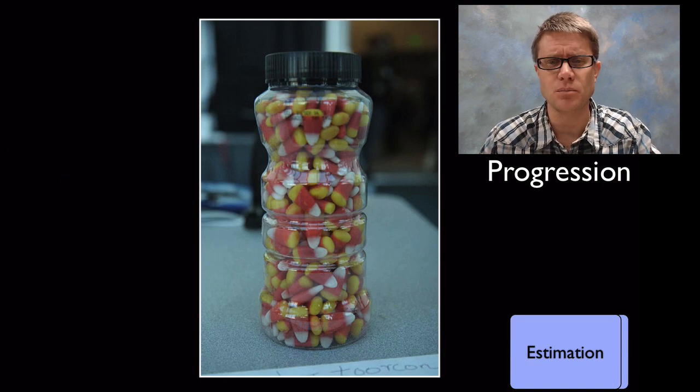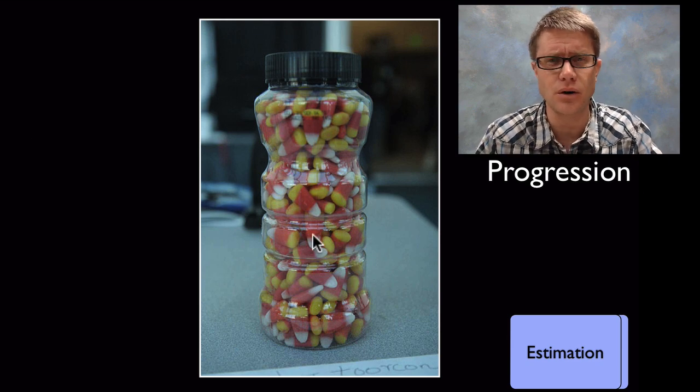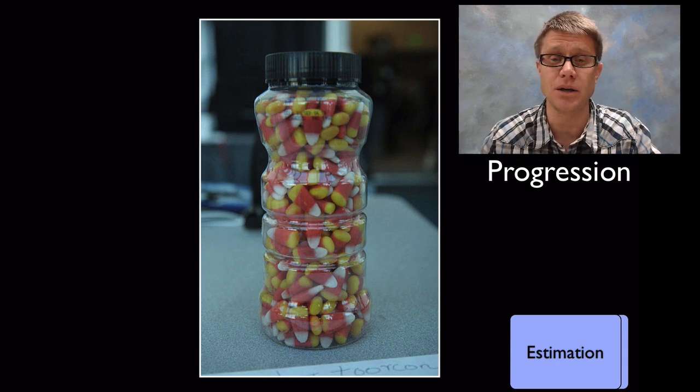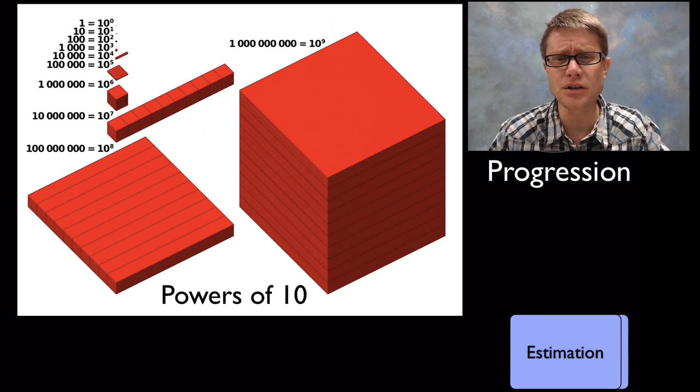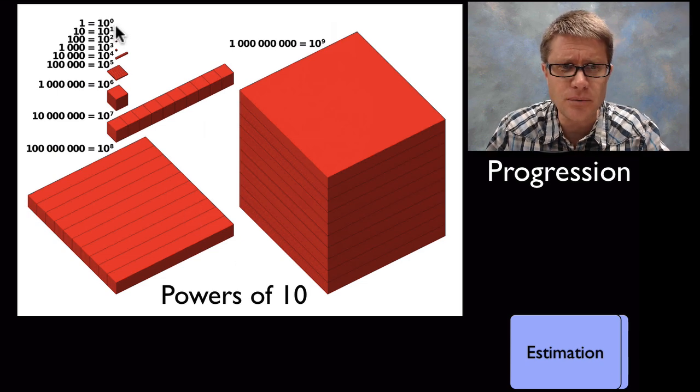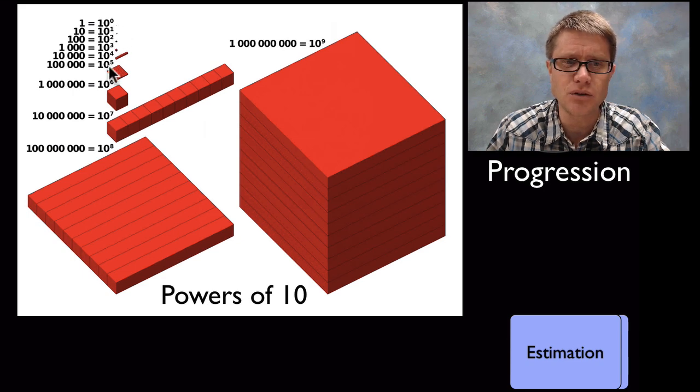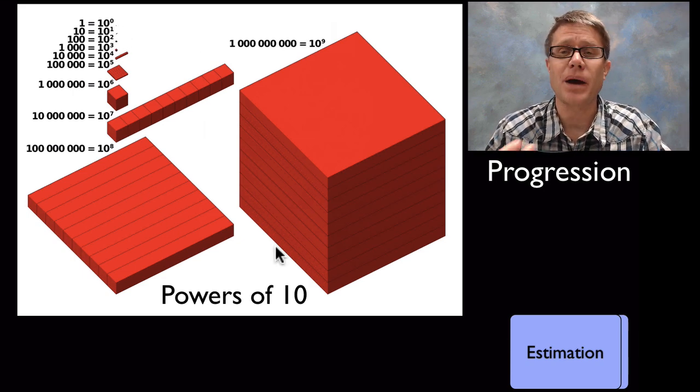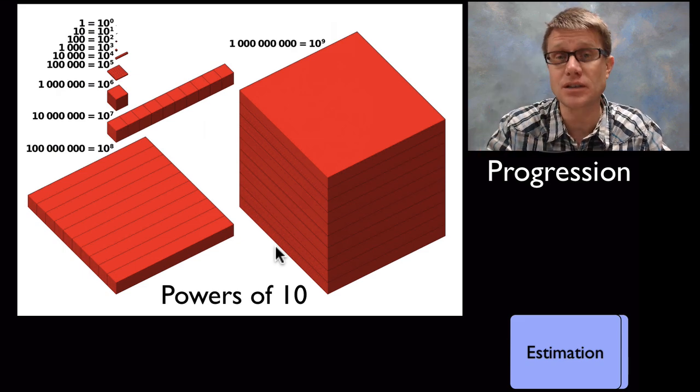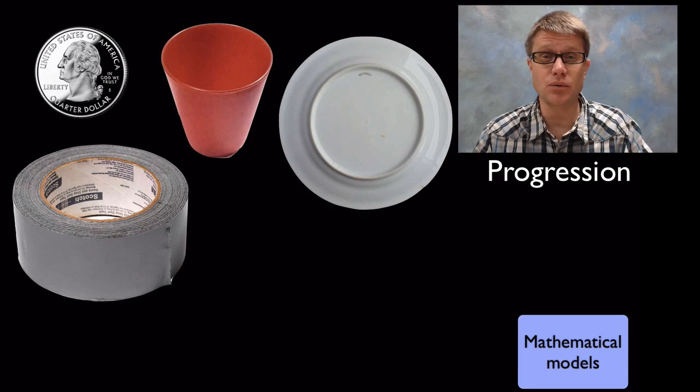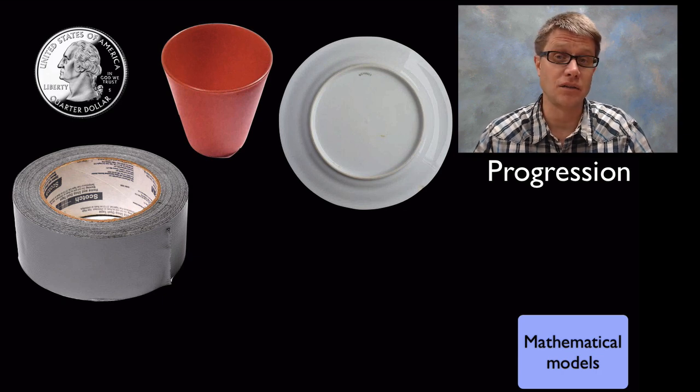As we move forward estimation becomes important. How many kernels of corn are in here? I don't really know the right answer. But we could use estimation to figure it out. If it's uniform throughout we could figure out how many are in there. And then understanding the powers of ten is important. If this little dot right here represents one or ten to the zero, then this right here is ten to the nine. Or this is one billion of those little dots. This gives you a sense of scale of the powers of ten. You want to have students estimating and then understanding the power of ten and why we use a base ten system.